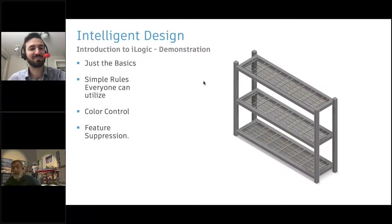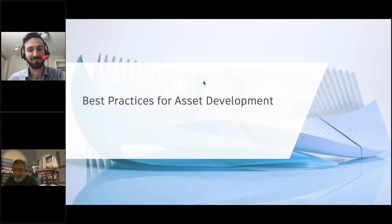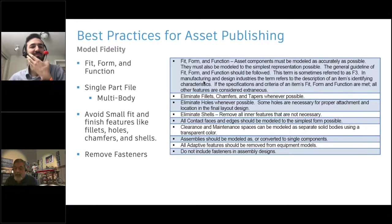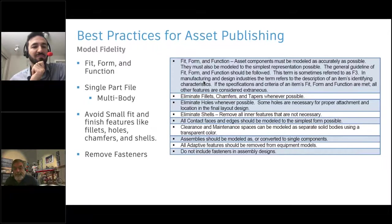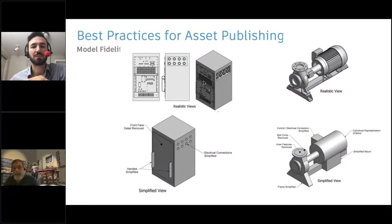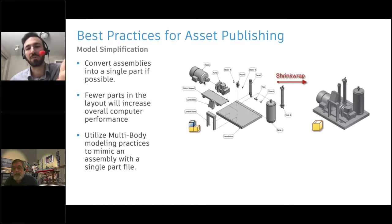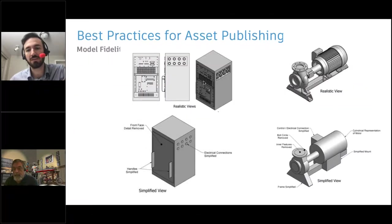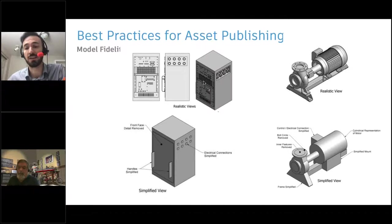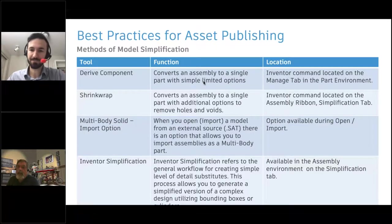Some best practices we've mentioned: very often we don't need the full level of detail, and we can use shrink wrap and other simplification tools available in Inventor to convert assemblies with lots of details into simplified shapes. We use standard Inventor functionality for that. Ideally we like assets to be a single part if possible, though that's not always the case — the robot shown is actually an asset of an assembly with constraints linked into the iLogic form.